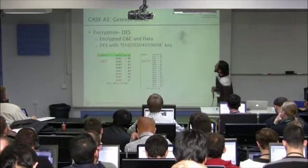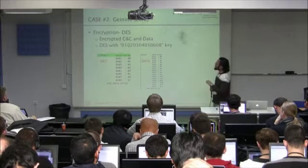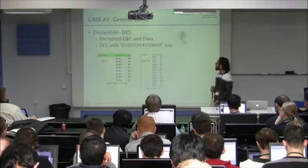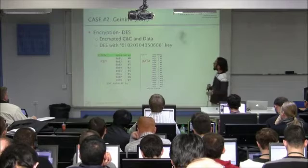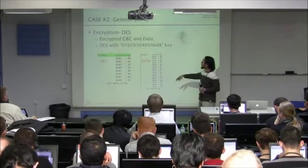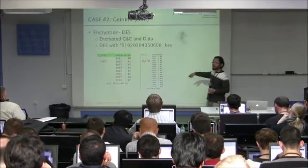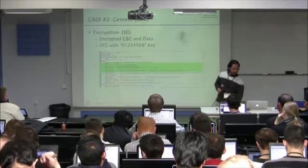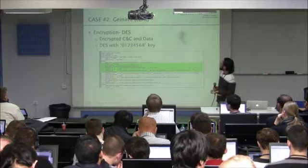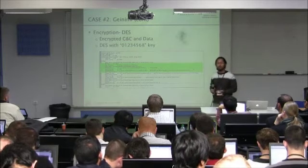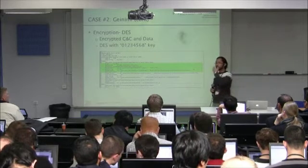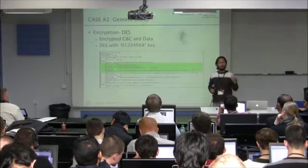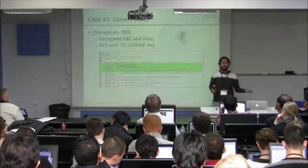It uses DES to encrypt the CNC data, as well as a bunch of data you need to work with. This is the key, and this is the data — just a portion of it. Since you have the source code, if encryption is implemented in this way it's eventually going to be broken as well, because we know the keys. Unless you go with PKI, it's going to be a challenge.